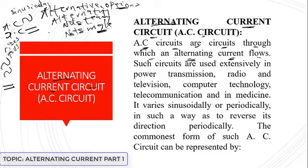AC has the capacity to vary and reverse its direction, which is why such circuits are used extensively in power transmission, radio and television technology, computer technology, telecommunications, and medicine. The current varies sinusoidally and periodically, reversing its direction continuously.